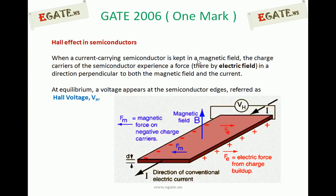Hall effect in semiconductors is defined like this: when a current-carrying semiconductor is kept in a magnetic field, the charge carriers of the semiconductor experience a force, thereby an electric field, in a direction perpendicular to both the magnetic field and the current.